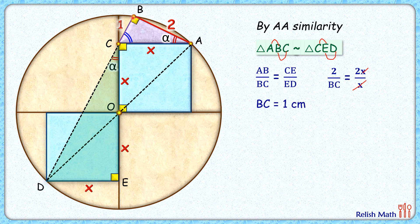That is, this length BC is 1 centimeter. So in this triangle BCA, applying Pythagoras theorem, we'll get hypotenuse square, that is x² = 2² + 1², or x² = 5.